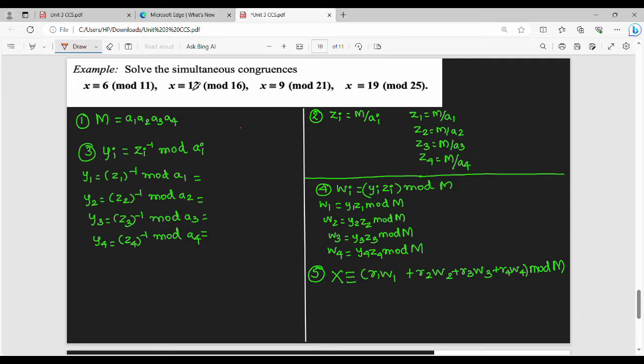So let's solve the simultaneous congruences and find x. First step is to remind our divisor, so mod right hand side is the divisor. So a1, a2, a3, a4 are the divisors. Mod left hand side is the remainders, so r1, r2, r3, r4.